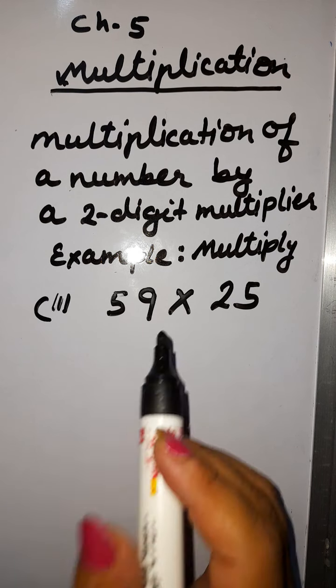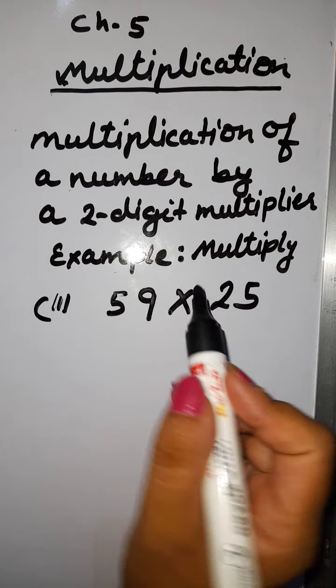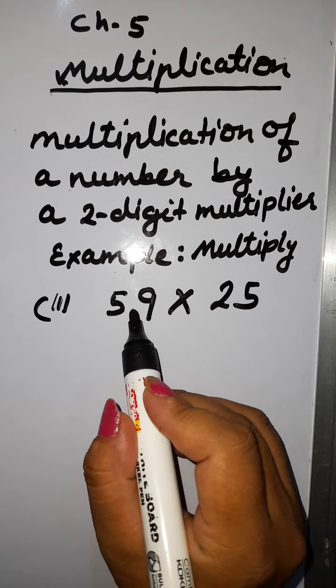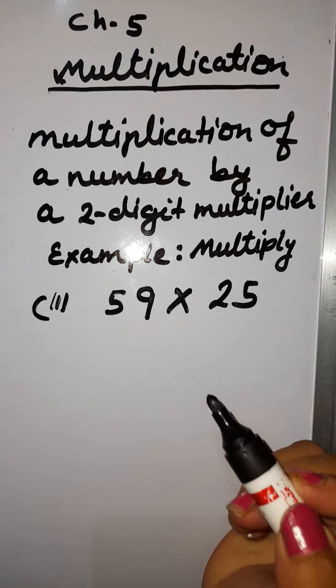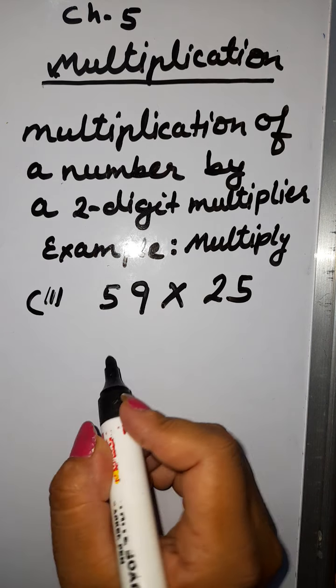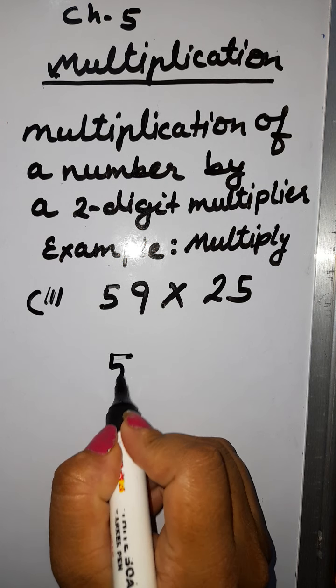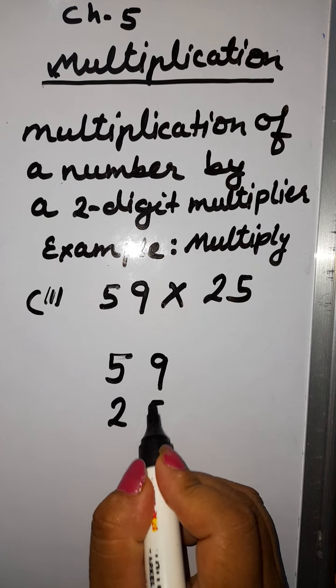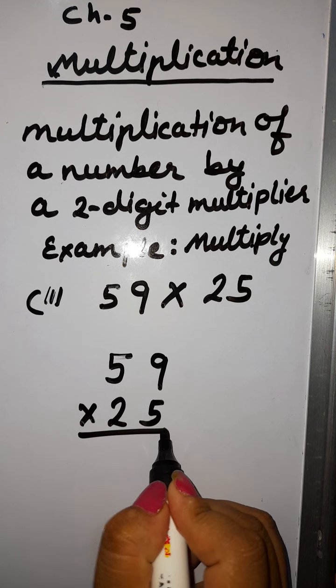Here we have another number, another example: multiply 59 by 25. As previous, we will write both the numbers in the column. 59 multiplied by 25.